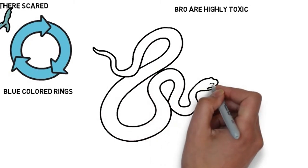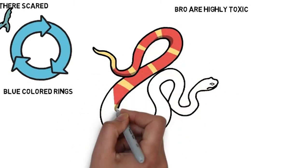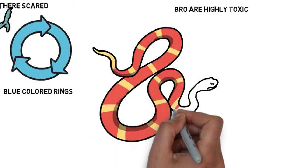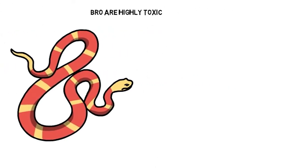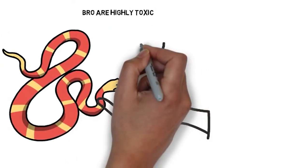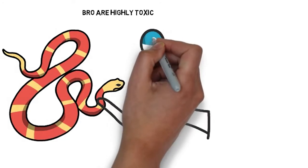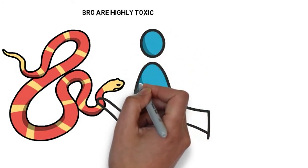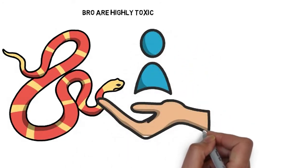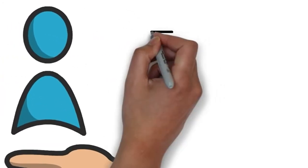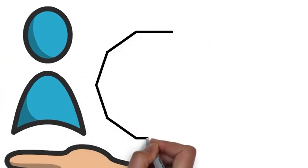Next is that blue ringed octopus are highly toxic. They are even more toxic and venomous than some snakes are. And these blue ringed octopus have enough venom to kill more than 10 people.